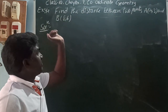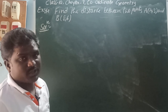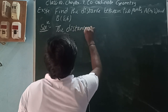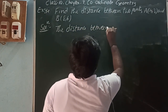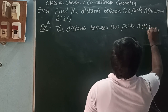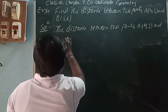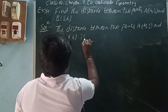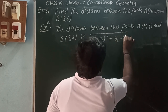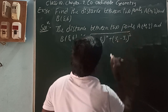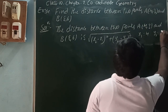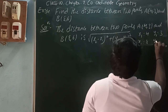Next, Example 4: find the distance between two points A(4, 3) and B(8, 6). The distance between two points A(4, 3) and B(8, 6) uses the formula square root of (x2 - x1)² plus (y2 - y1)². Here x1 = 4, y1 = 3, x2 = 8, y2 = 6.